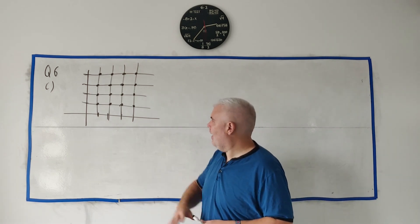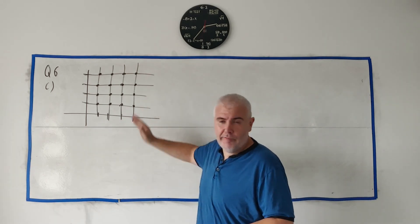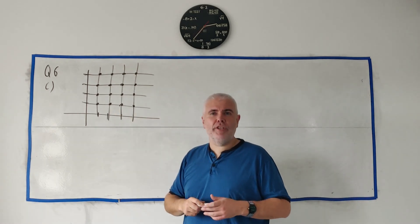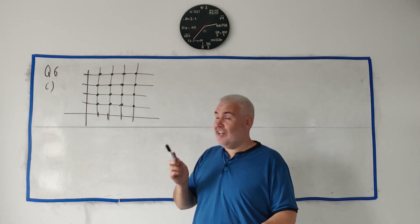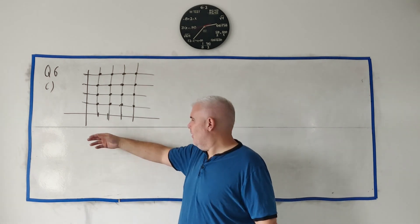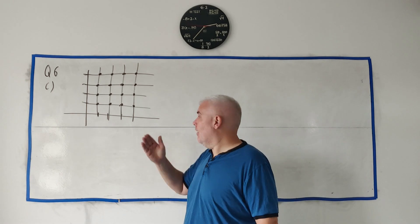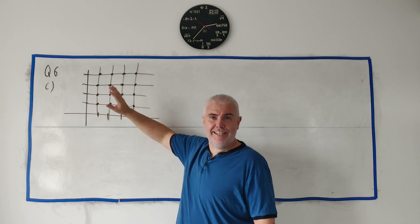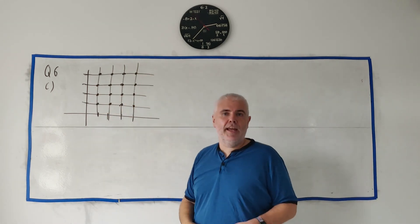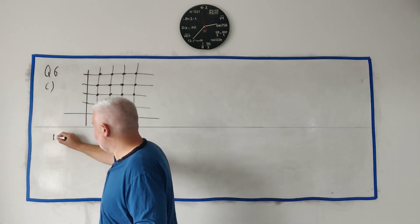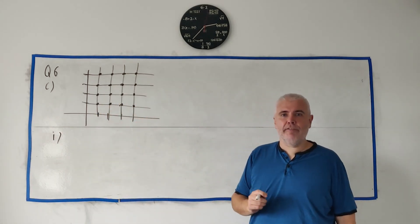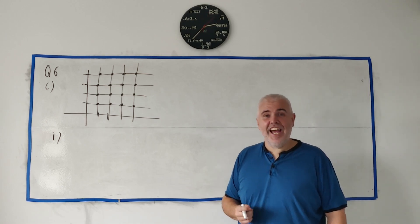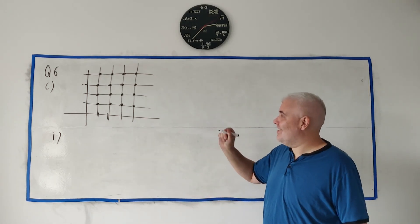In part C they describe a grid numbered 1 to 4, with a dot at every point (m, n) where m and n are natural numbers from 1 to 4 — so whole numbers only, no zeros or fractions. That gives us a 4×4 grid of 16 dots in total. They ask a couple of questions about choosing pairs of points from these 16 dots.